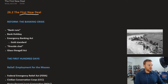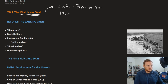Recall the First New Deal, or just the New Deal in general. This is FDR — Franklin Roosevelt — who was president in 1932. His plan was to fix the Great Depression, which is what the United States is experiencing.